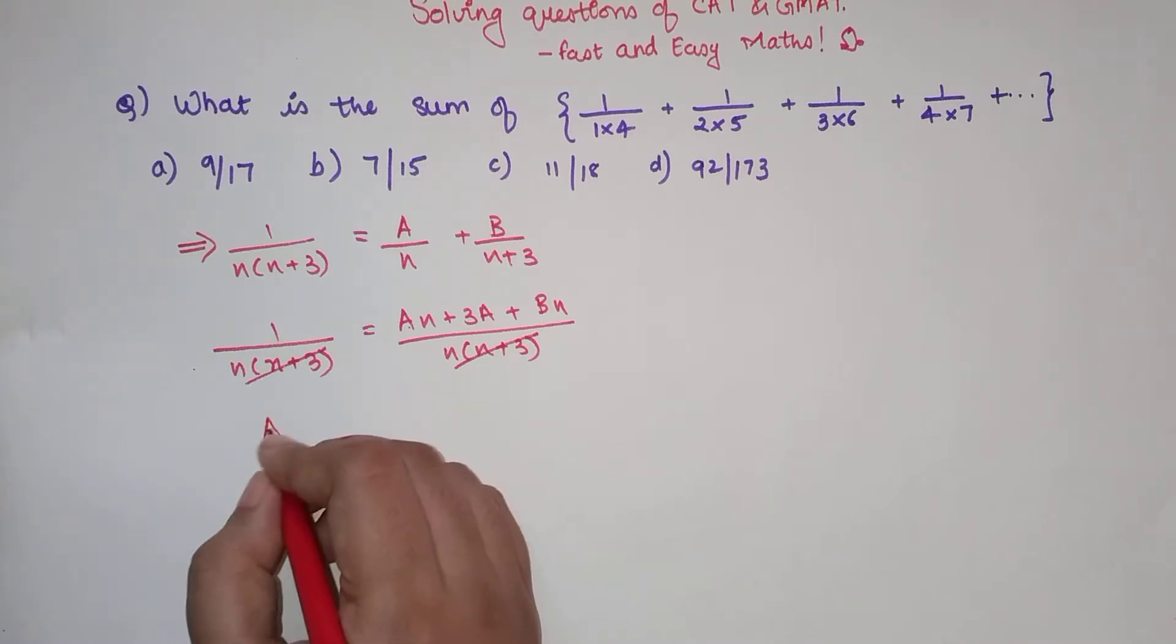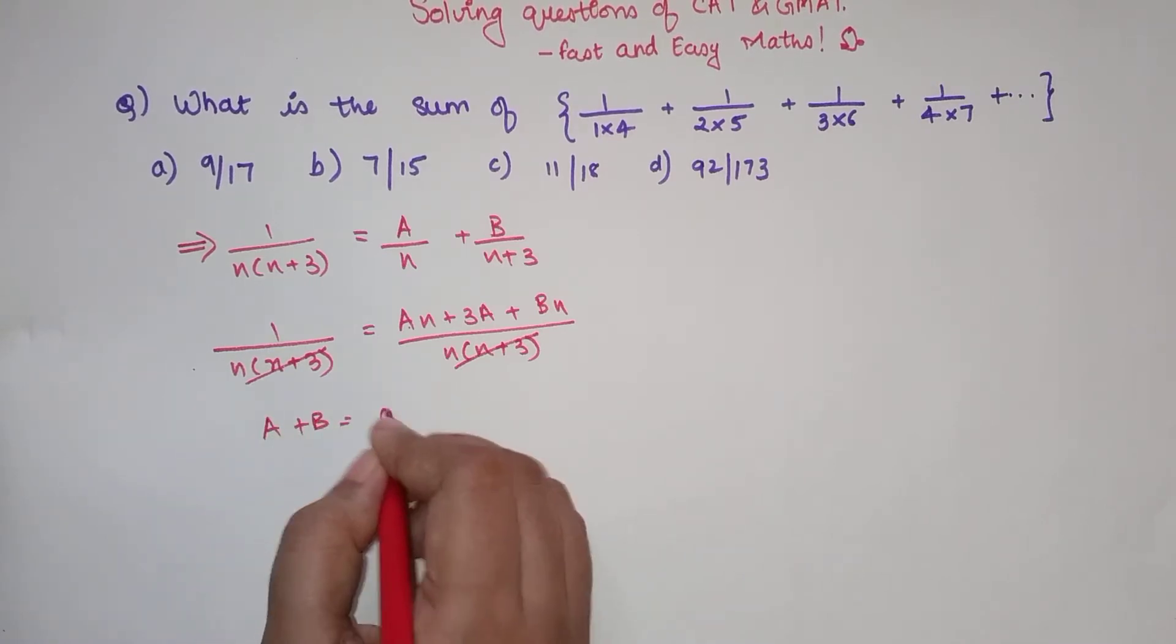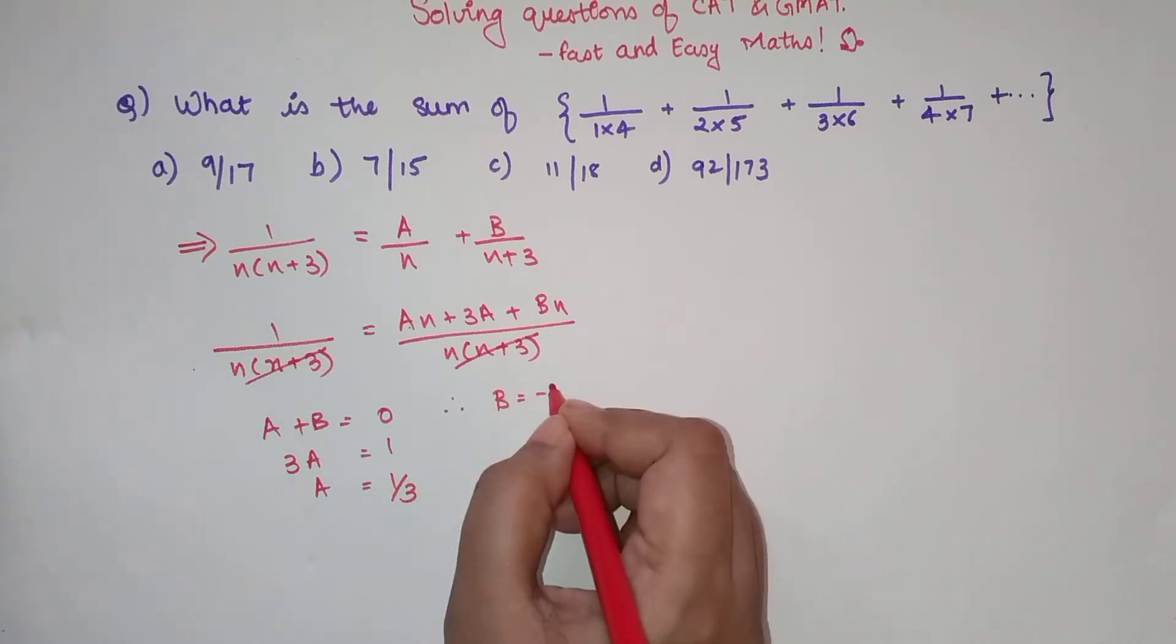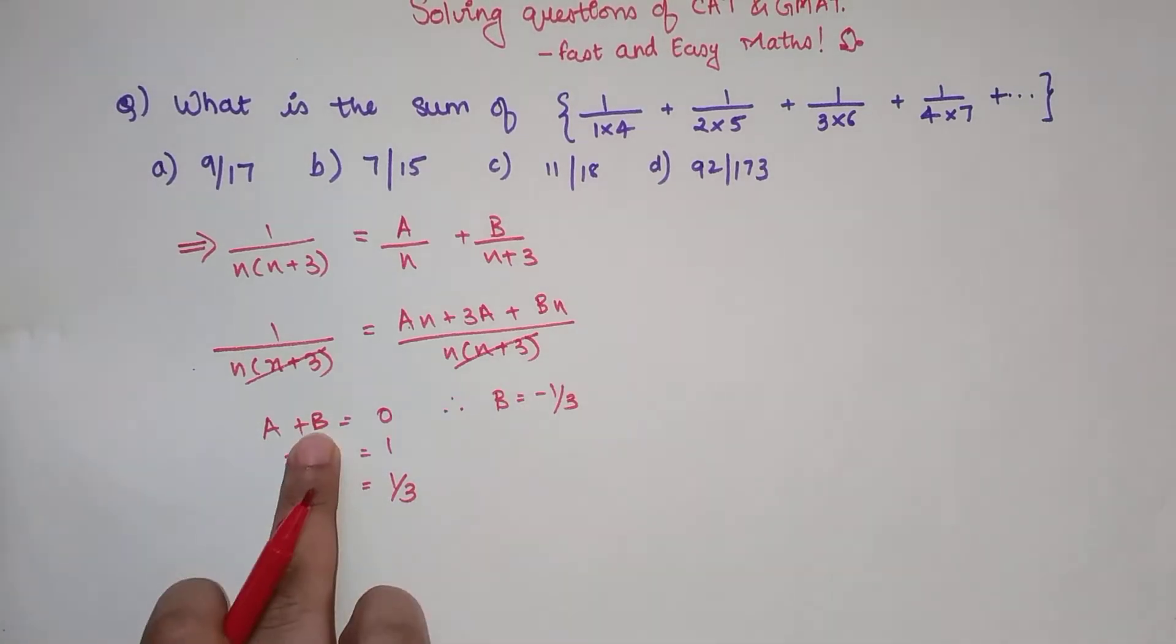So I can write down A plus B equals 0, and 3A is a constant which equals 1. So A equals 1 by 3, therefore I can write down B equals minus 1 by 3 because A plus B is then becoming 0.